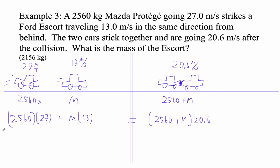All right. It's going to get zesty. Okay, so 2,560, I think we just do math, right? Times 27 is 69,120 plus 13M is equal to, and then I'm going to distribute the 20.6. So 20.6 times 2,560 is 52,736 plus 20.6M.